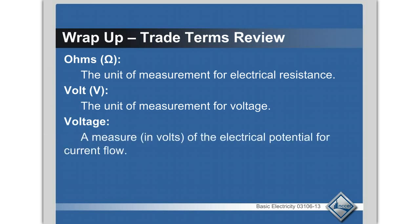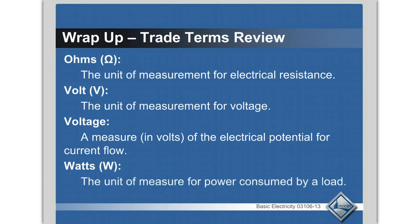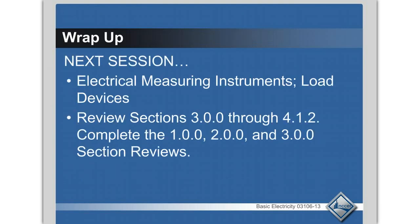Voltage is the electrical potential for current flow — that is our electromotive force. The higher the voltage, the more electrons it pushes. Watts — that is the unit of measurement of power consumed by a load.